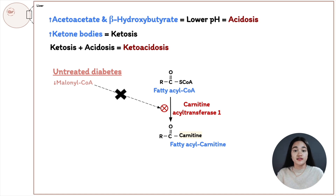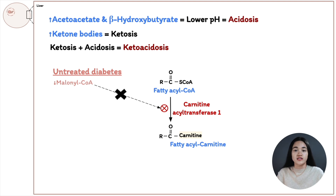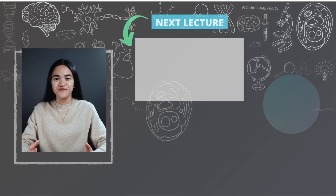So that is ketone bodies. In this lecture, we learned that when glucose is not available, we require an alternate energy source because fatty acids can't cross the blood-brain barrier, so we use ketone bodies to yield energy. We also talked about how excess production of ketone bodies is harmful and how this can lead to a condition called ketoacidosis.